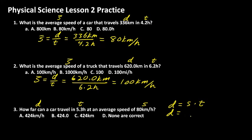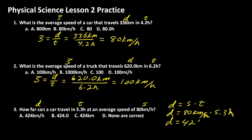We work this out in three steps. The speed is 80 kilometers per hour times the time, 5.3 hours. You'll notice that hours is going to cancel out, leaving kilometers — which is a unit of distance, just what we're looking for. Remember, it's important to carry those units through the problem and set it up in three steps on paper. Don't just plug the numbers into a calculator. The answer comes out to 424 kilometers.